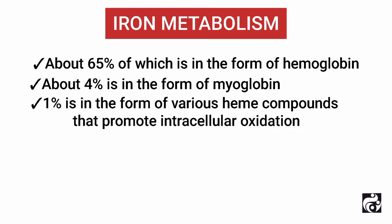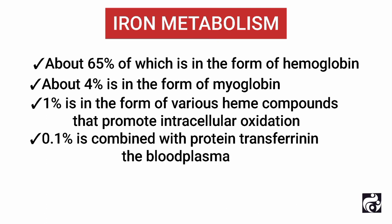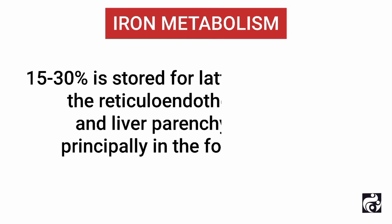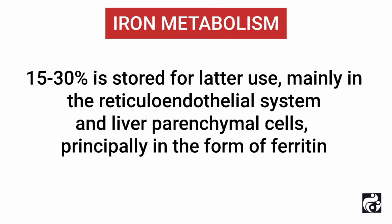One percent is in the form of various heme compounds that promote intracellular oxidation, 0.1 percent is combined with the protein transferrin in the blood plasma, and 15 to 30 percent is stored for later use mainly in the reticuloendothelial system and liver parenchymal cells, principally in the form of ferritin.